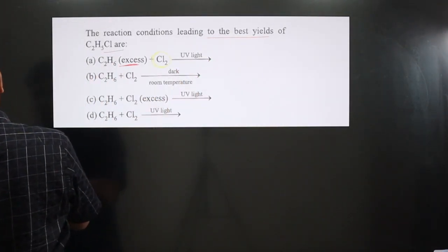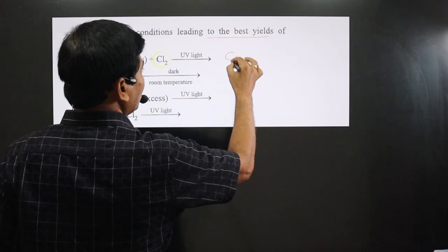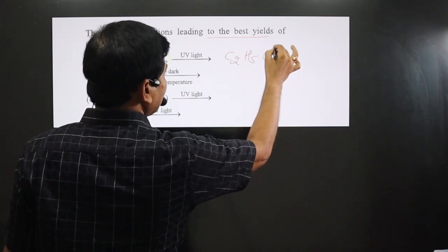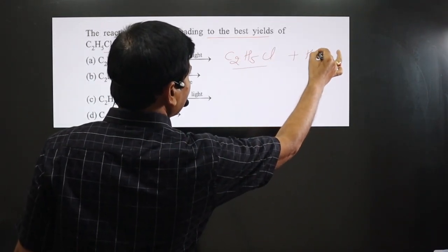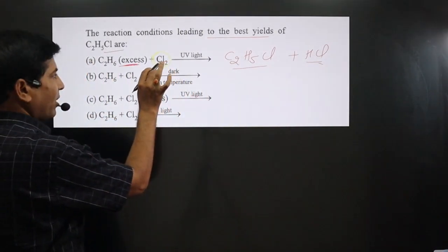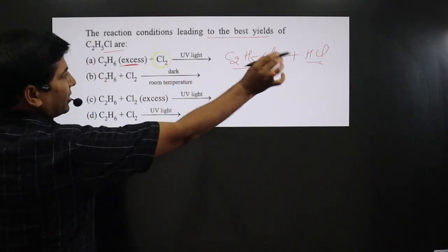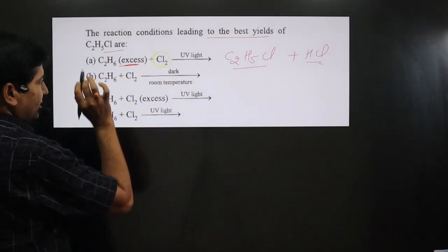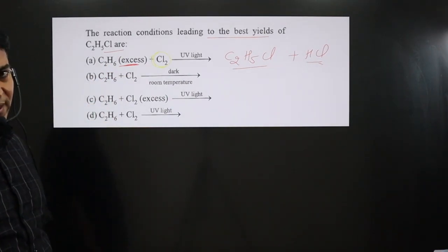We have C2H5 and Cl product formed and HCl is removed. One Cl from here, one H from here, HCl is removed and the other Cl will attach here. So this is ethyl chloride, C2H5Cl.